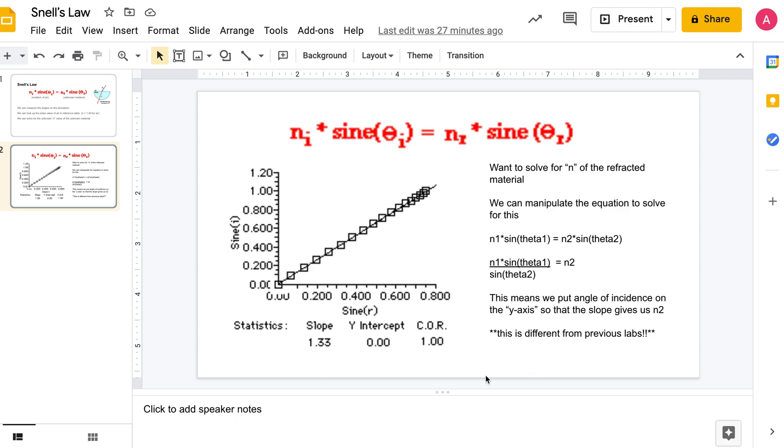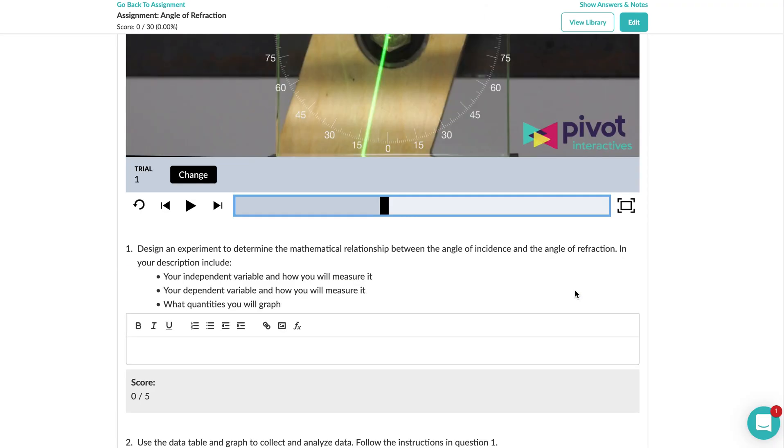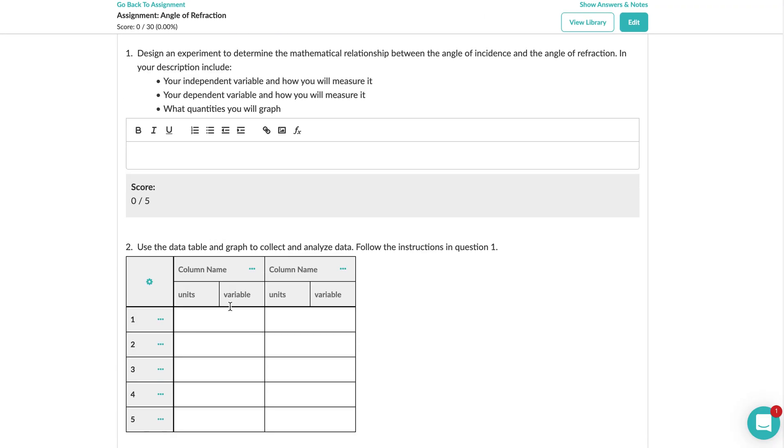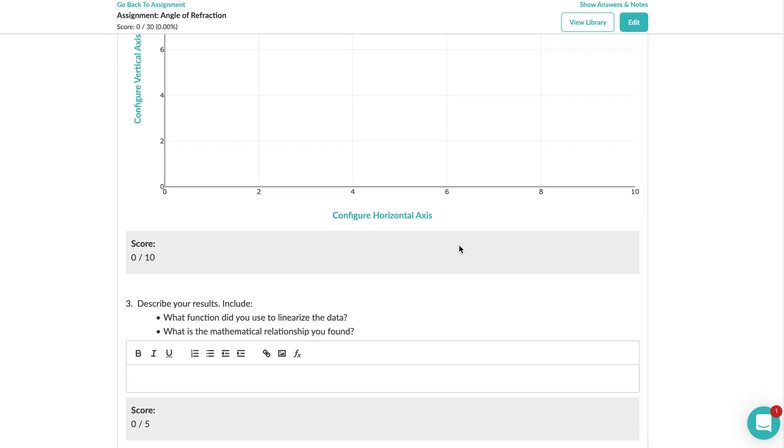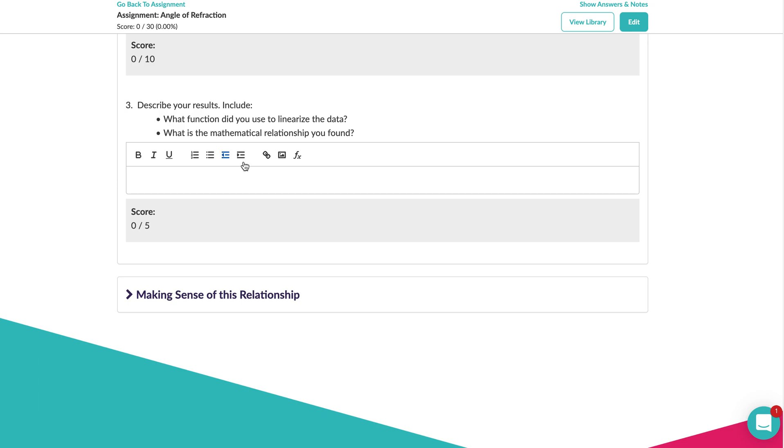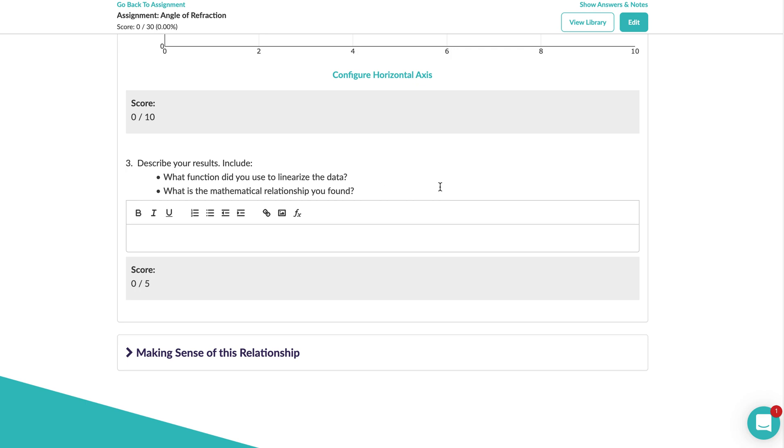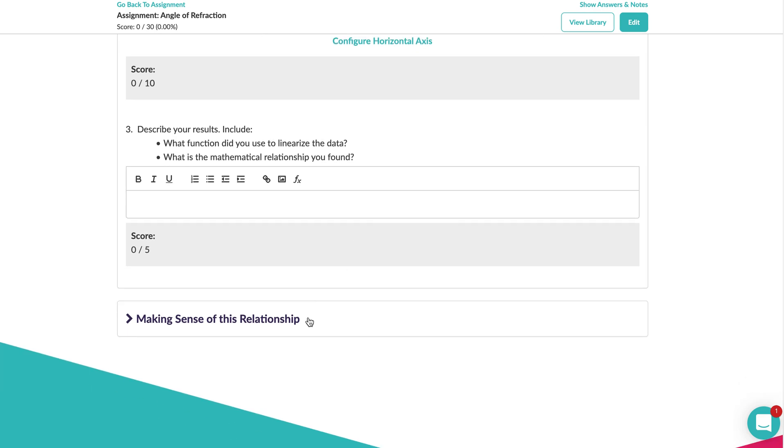In the pivot simulation you're going to set up your variables, set up your graph, make your graph. Then it asks you if you need to linearize it or not. If it's already a line you do not need to linearize it, but you should write the linear equation that it has, so that y equals mx plus b, or I think in this case they call it y equals ax plus b. You'll write that equation and then there's a whole section on making sense.